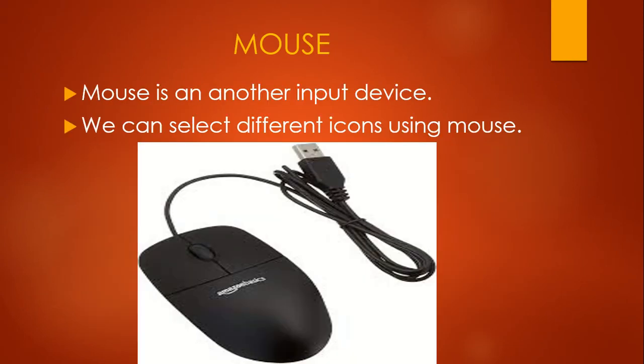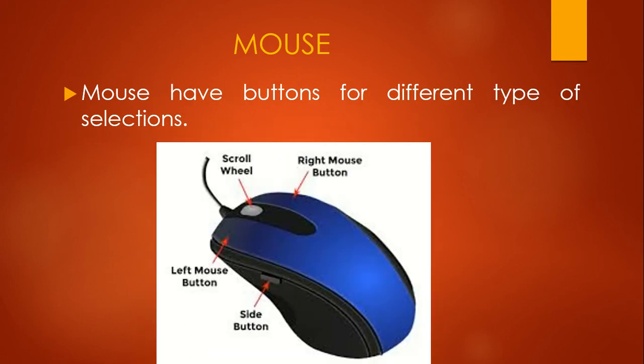Next hardware on the list is mouse. All of you must have seen mouse at their homes. Mouse is used to point at different icons on the monitor. We can select icons by mouse. If we look at the appearance of mouse, it has two or three buttons.